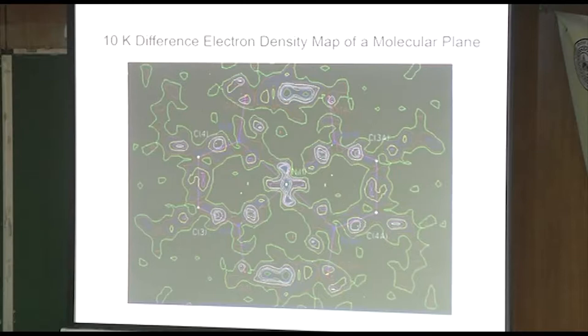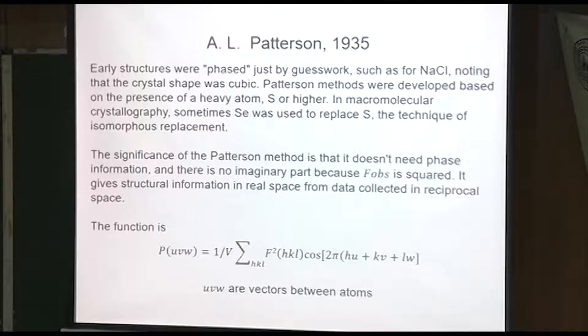Coming back to Patterson, the method doesn't need a phase because what you're doing is you're squaring the observed structure factor. And you get this equation here. This makes a new map. See here you've got F squared, which is plotted in U, V, W instead of X, Y, Z. And the map is a map of vectors.